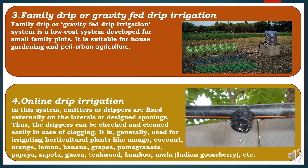The fourth drip irrigation system is online drip irrigation. In this system, emitters or drippers are fixed externally on the laterals at designated spacings, so the drippers can be checked and cleaned easily in case of clogging. It is generally used for irrigating horticultural plants like mango, coconut, orange, lemon, banana, grapes, pomegranate, papaya, sapota, guava, teakwood, bamboo, amla, etc.